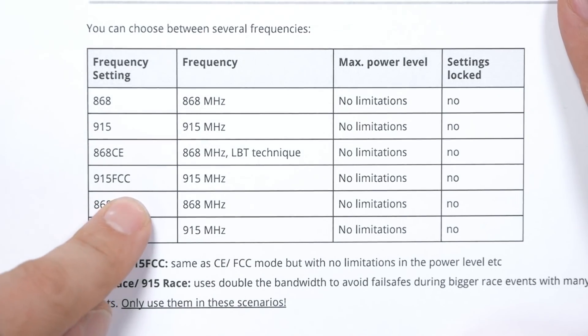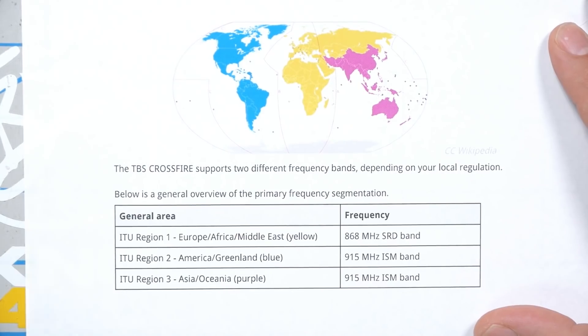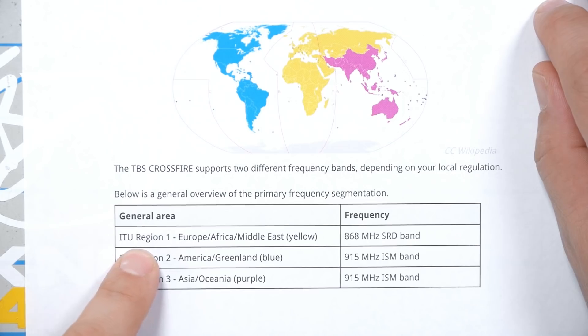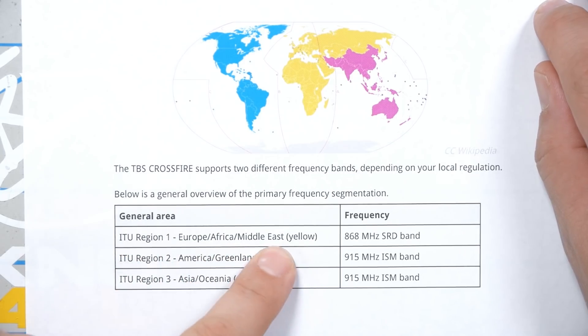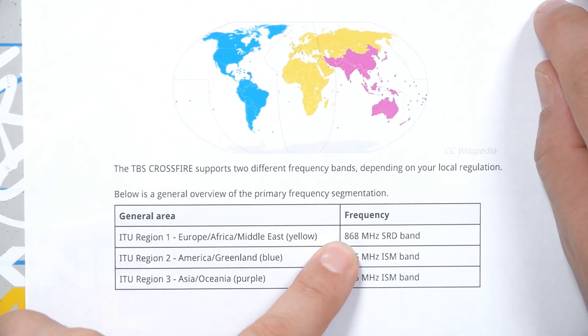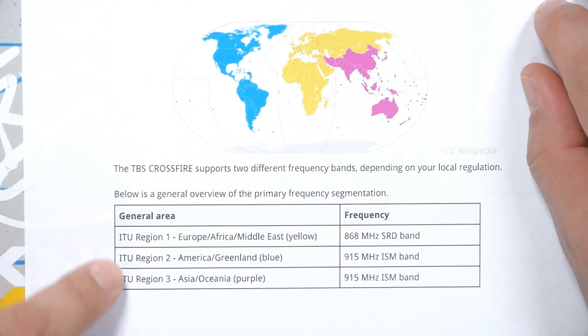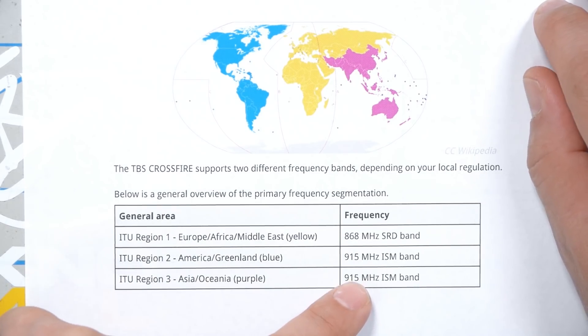As we see in this page from the TBS Crossfire User Manual, the main thing that these settings do is control what frequency and output power the radio will use. Different countries have different regulations about what frequencies and output powers you're allowed to use. ITU Region 1 — Europe, Africa, and Middle East — uses 868 MHz, and the rest of the world, ITU Region 2 and 3, uses 915 MHz.